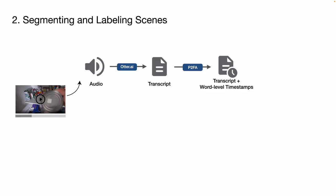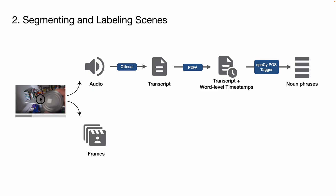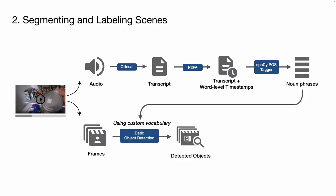Next, AVScript also segments the footage into multiple scenes. From the transcript, we first extract the noun phrases using a part-of-speech tagger. Then, from the frames captured at 60 frames per second, we detect objects using the noun phrases as the custom vocabulary. By only detecting the objects mentioned in the narration, we limit our object detection to objects that are likely to be important. Using the object detection results, we segment the videos into higher-level scenes by using a sliding window.